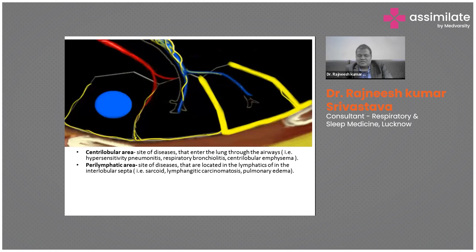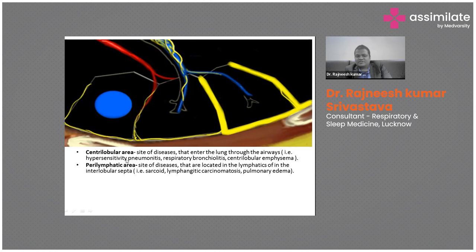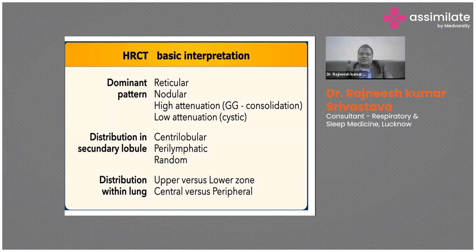The central lobular area is the site of disease that enters the lung through airways, such as hypersensitivity pneumonitis, respiratory bronchiolitis, or centrilobular emphysema. Hypersensitivity pneumonitis is caused by airborne allergens or organic dust exposure — known as farmer's lung — and affects the central lobular area via airways. The perilymphatic area is involved in diseases of lymphatics, like sarcoidosis, lymphangitis carcinomatosa, or pulmonary tumors. On CT we must identify which area is predominantly affected to point toward the underlying disease.